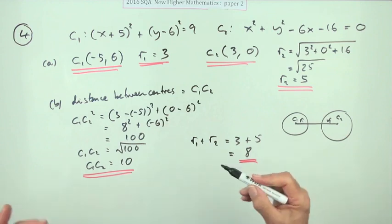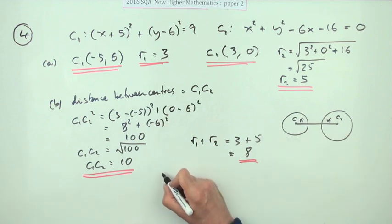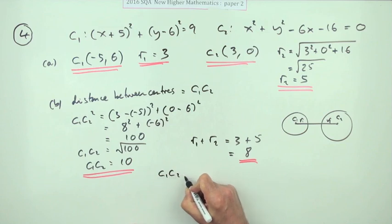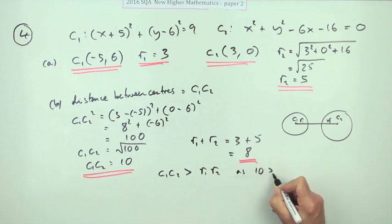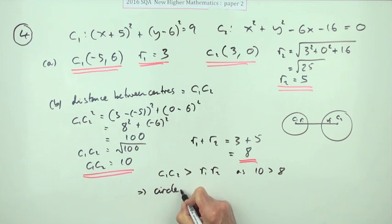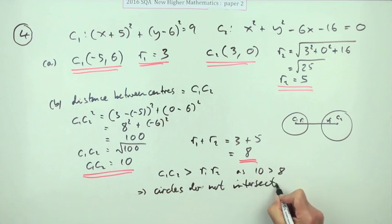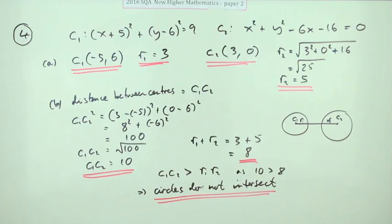But of course you have to make a statement, so I'll say C1C2 is greater than R1 plus R2. We will justify it as 10 is greater than 8, which means the circles do not intersect. And I'm just writing a plus between the R1 and R2.